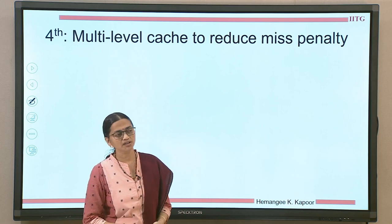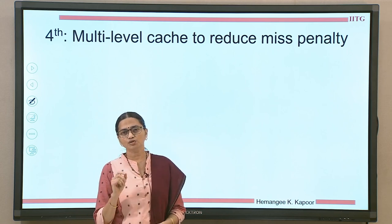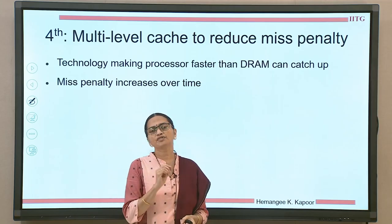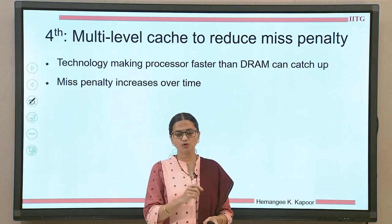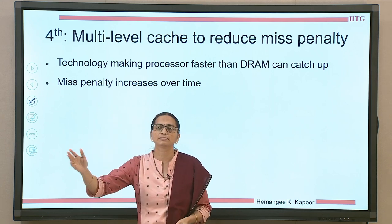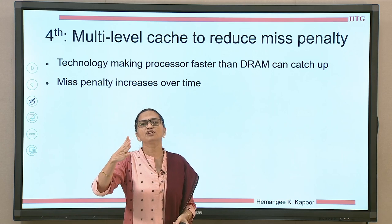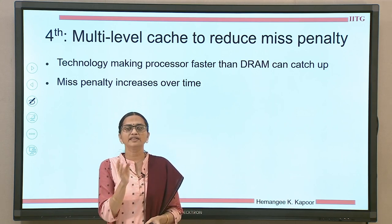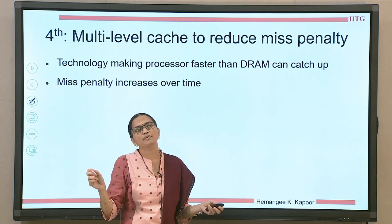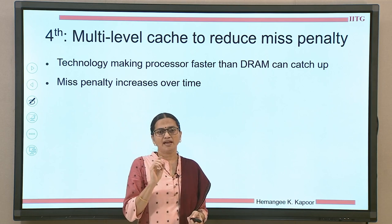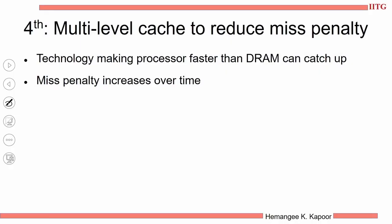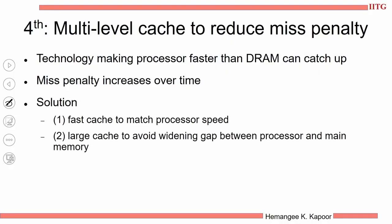The fourth optimization is targeting to reduce miss penalty. To reduce miss penalty, we have to understand what are the different components of the miss penalty. From the cache, we have to go to the next level — either the next level cache or the main memory — and eventually at some level we have to go to the DRAM. DRAMs are known to be slower than the processors, so there is a technology gap which is making DRAM slower compared to the processor. So overall time to fetch data from the DRAM increases, which means miss penalty is increasing over time.